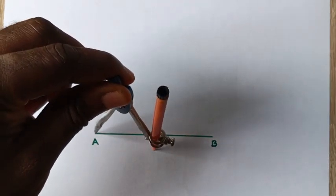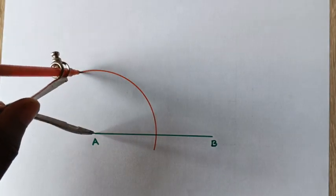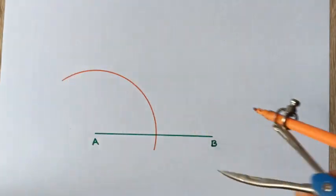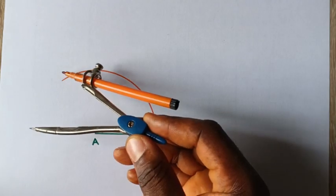Once you cut the arc, this point is your point C, and here is your point B already.